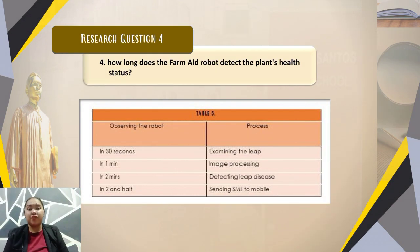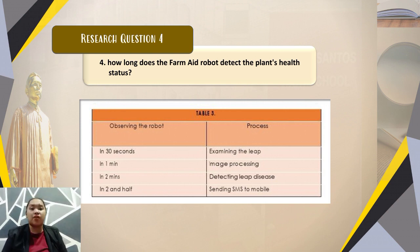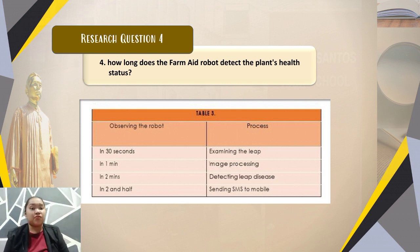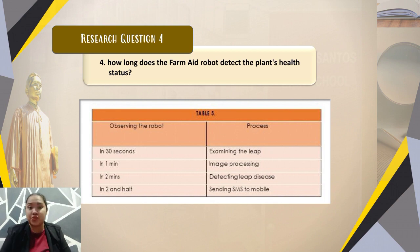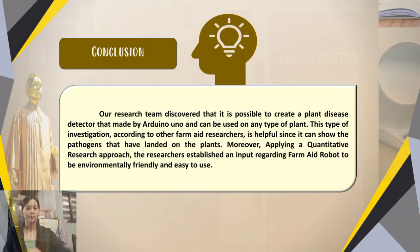Research question four: how long does the farm aid robot detect the plant's health status? The researchers conducted several trials. Within 30 seconds, the robot senses parts of the leaf. After one minute, the robot starts to process the image to find the specific disease, researching and identifying possible problems. At two minutes, the robot produces a result, and within two and a half minutes, the robot sends a message to the user's mobile phone via SMS.